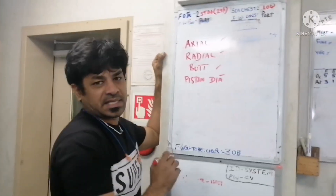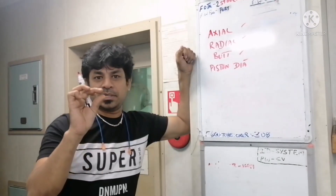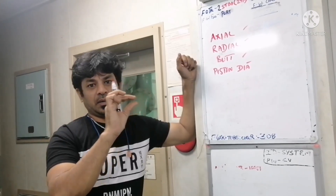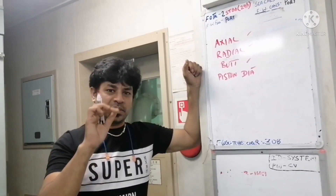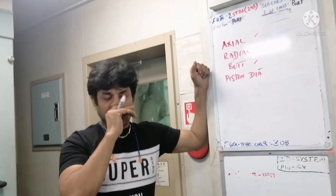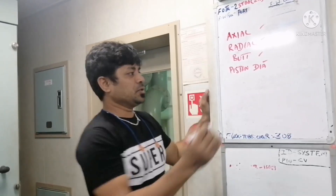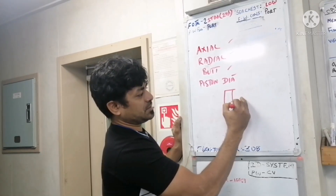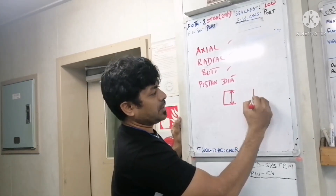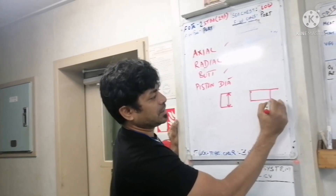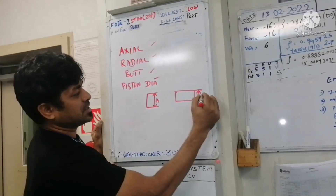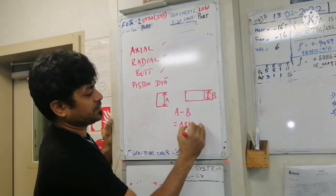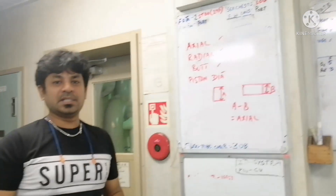First we come to axial clearance. Axial clearance is very simple — you just measure the width of the piston ring groove and you measure the thickness of the piston ring. You measure these two and subtract the values to get the axial clearance. So if this is your piston ring groove, this distance is A, and this is your piston ring, which is B. So A minus B gives you your axial clearance.